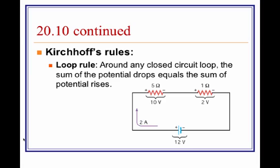Second rule is that around any closed circuit loop, the sum of the potential drops is equal to the sum of the potential rises. This means that the potential provided by the battery, in this case 12 volts, is equal to the individual potential drops across all the devices.